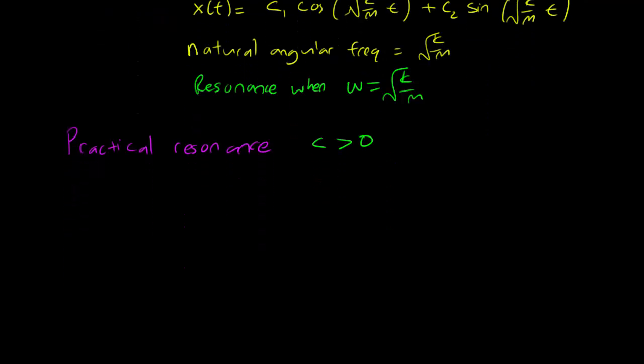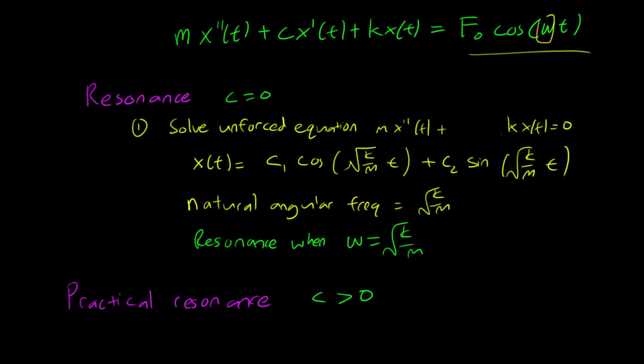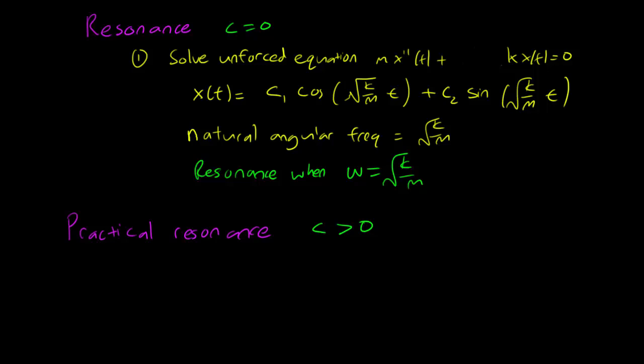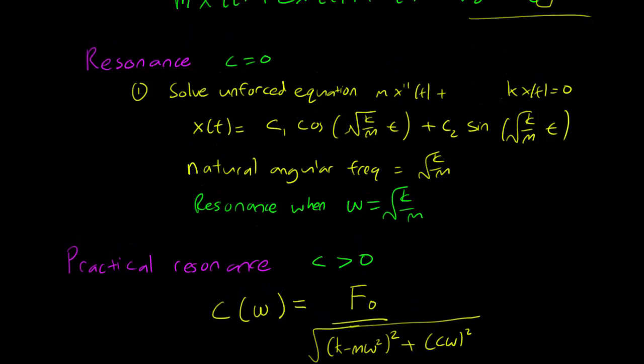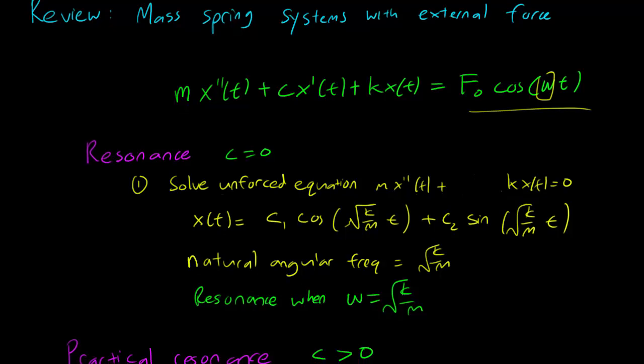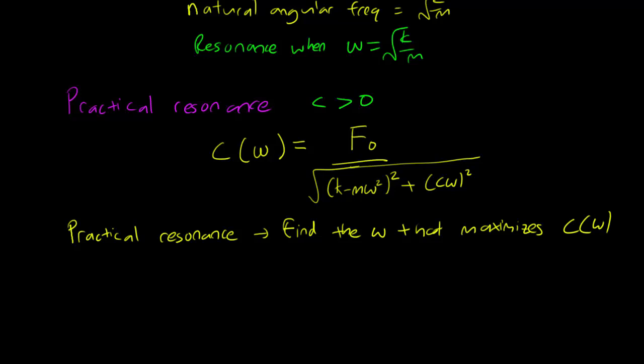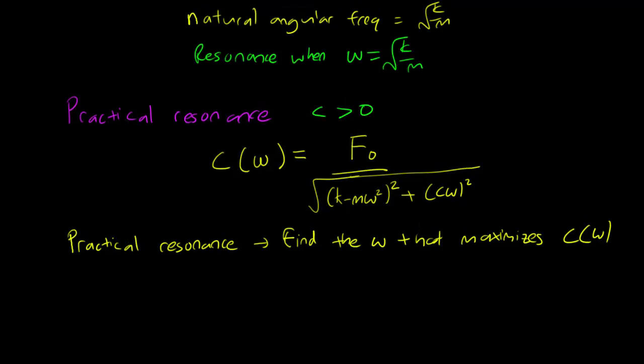For the case where there is friction, we cannot have true resonance, so we never have the system completely collapse. But we do have this idea that the external force's frequency can affect the amplitude of the solution. You have this amplitude formula, so whenever your external force is F₀cos(ωt), the amplitude of your resulting solution will be F₀ over the denominator. The key to find a practical resonance is to find the frequency ω that maximizes C. You can do this by regular calculus methods, set the derivative of C to be equal to 0 and find the appropriate ω.